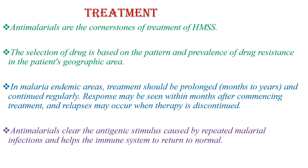Anti-malarials are the cornerstone of treatment for Hyperactive Malarial Splenomegaly Syndrome. Drug selection is based on the pattern and prevalence of drug resistance in the patient's geographic area. In malaria-endemic areas, treatment should be prolonged — potentially from months to years — and taken regularly. Response may be seen within 6 months, especially 3 to 6 months after commencing treatment.